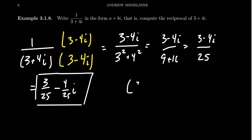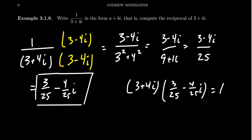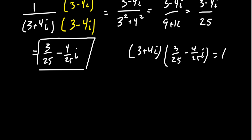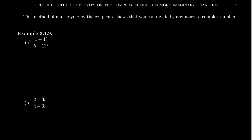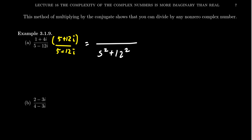I'll leave it up to you to check: if you take 3 plus 4i and multiply it by 3 over 25 minus 4 over 25 i, this product equals 1, showing that we did find the reciprocal of the complex number. Let's do a few more examples. If you have 1 plus 4i over 5 minus 12i, the idea is to multiply the top and bottom by the conjugate, which in this case would be 5 plus 12i. You don't really have to worry about the denominator because it always gives you the real part squared plus the imaginary part squared.